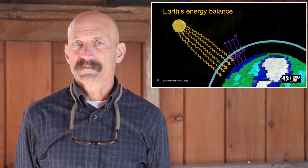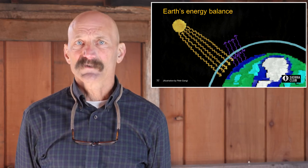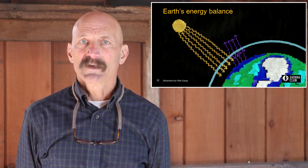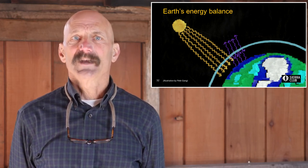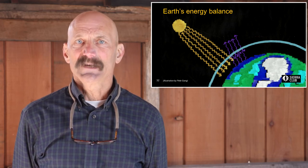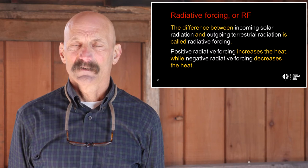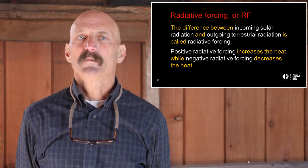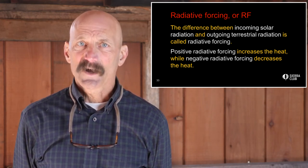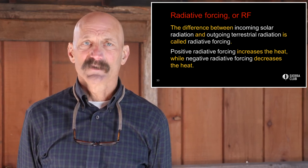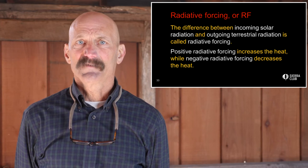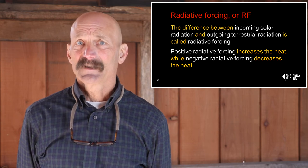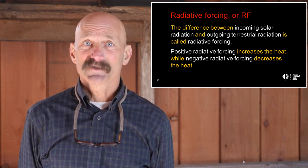Prior to human intervention in the climate system — and despite the volcanoes, wildfires, asteroids, and the tilt and wobble in the Earth's orbit — incoming and outgoing radiation were in dynamic balance. The Earth was said to be in energy balance. The difference between incoming solar radiation and outgoing terrestrial radiation is called radiative forcing. Positive radiative forcing increases the heat, while negative radiative forcing decreases the heat. Note that positive and negative here are not value judgments — they just mean up and down.